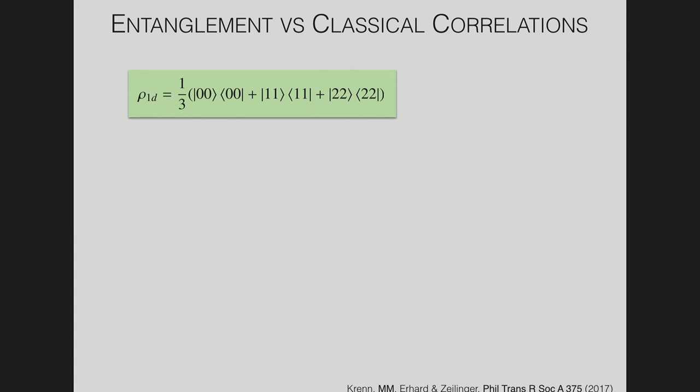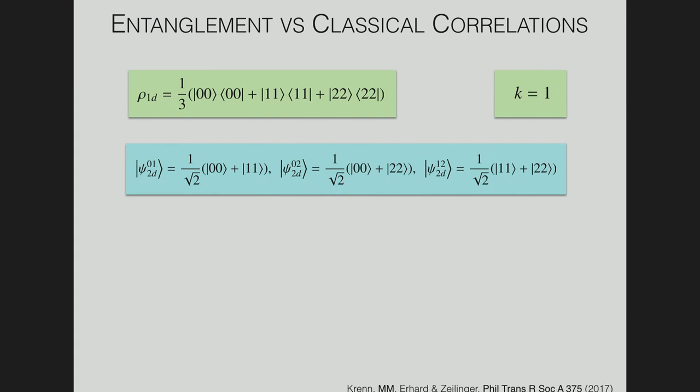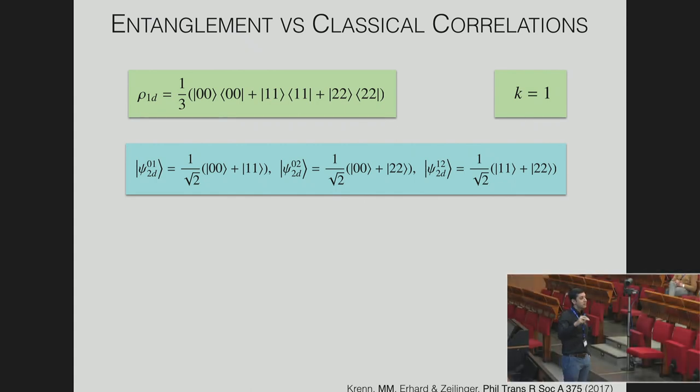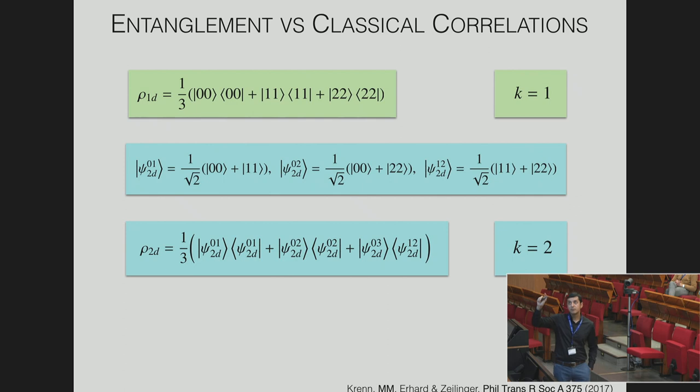A quick toy example of entanglement versus classical correlations. This is a perfectly classically correlated state in three dimensions. You either get 0,0 or 1,1 or 2,2 with no coherence. If you did the calculation on this, the Schmidt rank of the reduced density matrix of this state would be 1. If you construct a state made up of essentially three Bell pairs—each of these individually would have a Schmidt rank of 2, so they are two-dimensional—if you constructed a state that is a classical mixture of all three of these Bell pairs, this would also have a Schmidt rank of 2, even though it looks like there are three levels involved. It's a typo there, that should be 1,2. This is a maximally entangled three-dimensional state and would give you a Schmidt rank of 3.